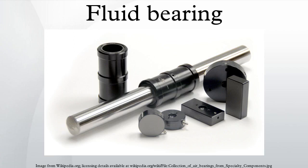Hydrostatic bearings rely on an external pump. The power required by the pump contributes to system energy loss, just as bearing friction otherwise would. Better seals can reduce leak rates and pumping power, but may increase friction. Hydrodynamic bearings rely on bearing motion to suck fluid into the bearing, and may have high friction and short life at speeds lower than design, or during starts and stops. An external pump or secondary bearing may be used for start-up and shut-down to prevent damage to the hydrodynamic bearing. A secondary bearing may have high friction and short operating life, but good overall service life if bearing starts and stops are infrequent.